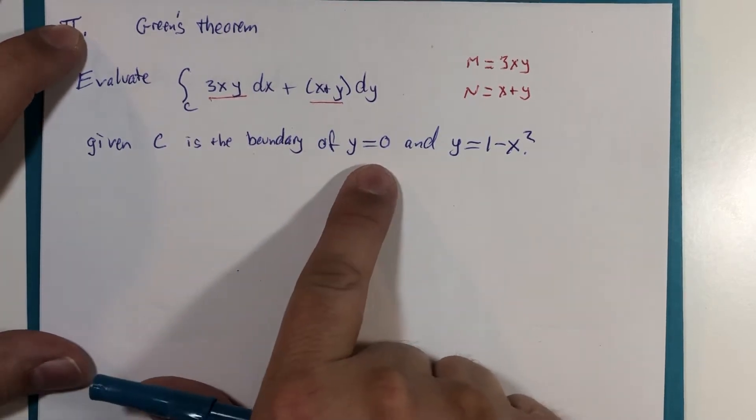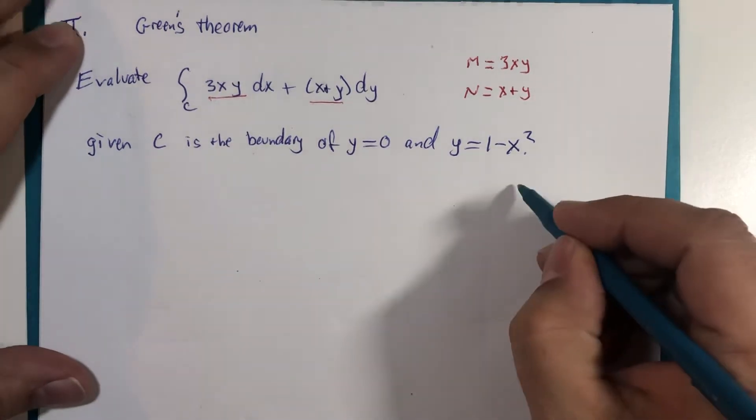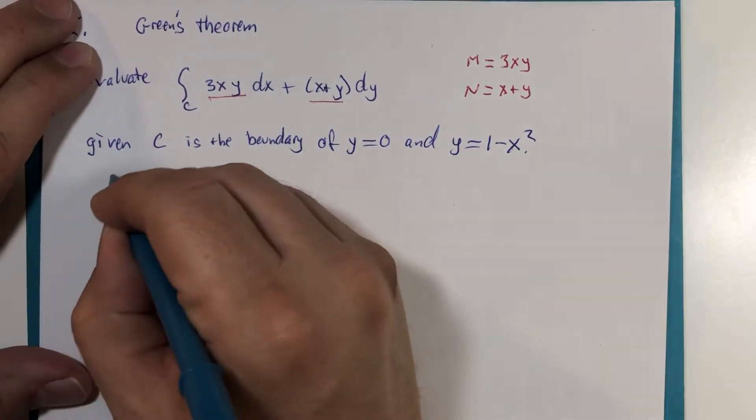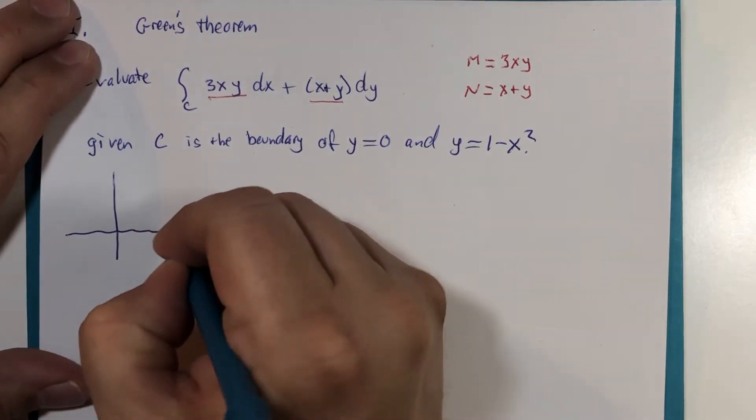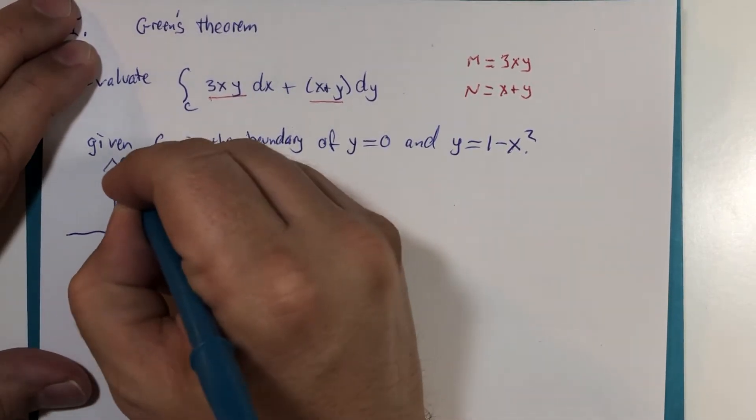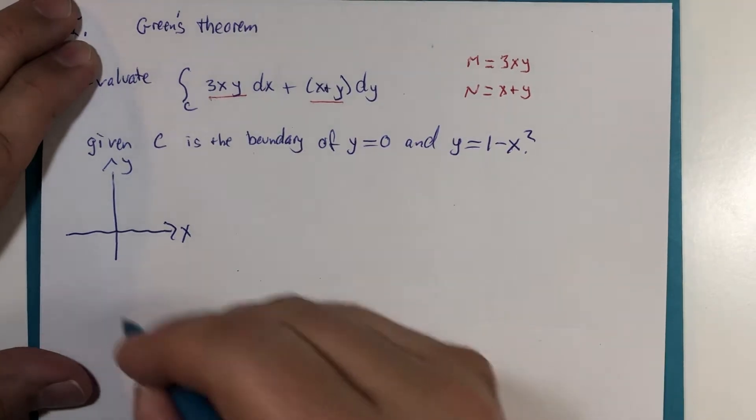is the boundary of the y equals 0 graph, which is the x-axis. Let's do it here. And y equals 1 minus x squared,